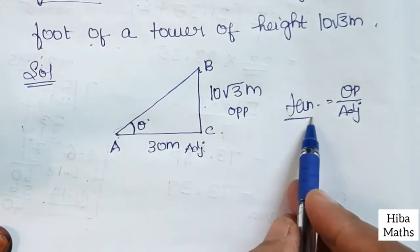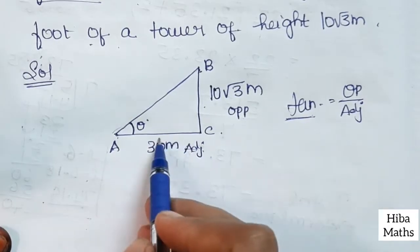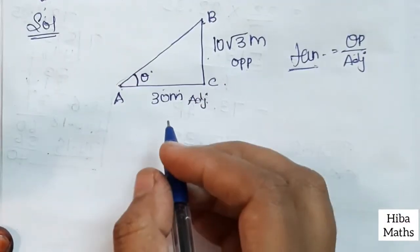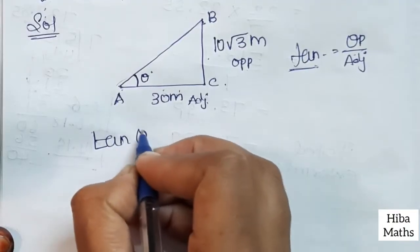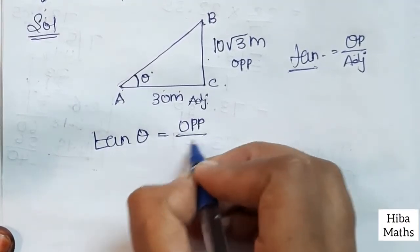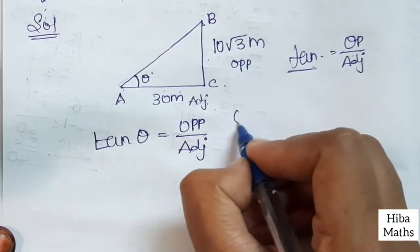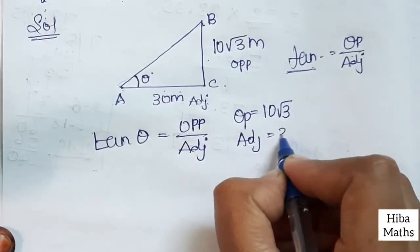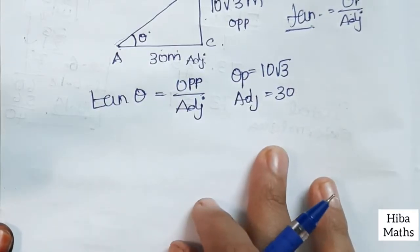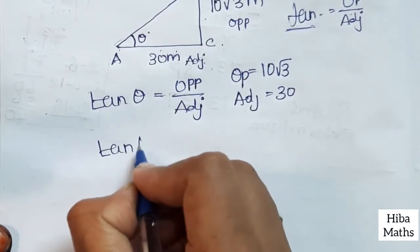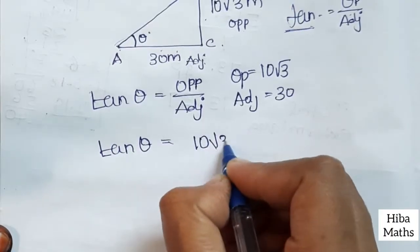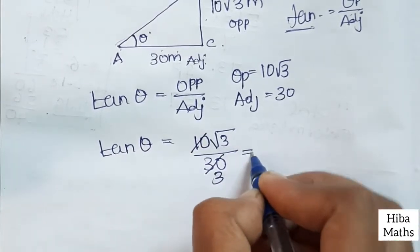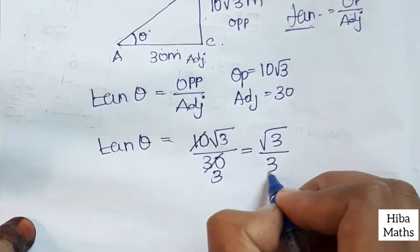The opposite side value is 10√3 and the adjacent side value is 30 meters. We have to find theta. Tan theta is equal to 10√3 by 30. How do you divide it? 10 cancels, giving root 3 by 3.